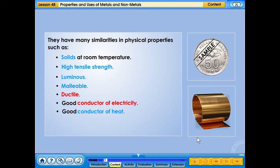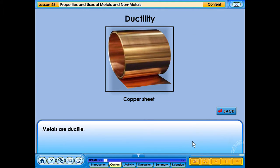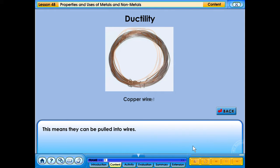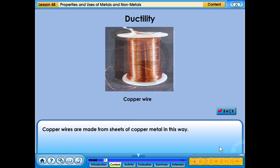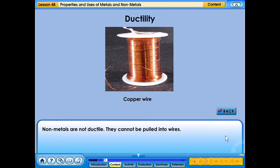Metals are ductile. They can be pulled into wires. Copper wires are made from sheets of copper metal in this way. Non-metals are not ductile. They cannot be pulled into wires.